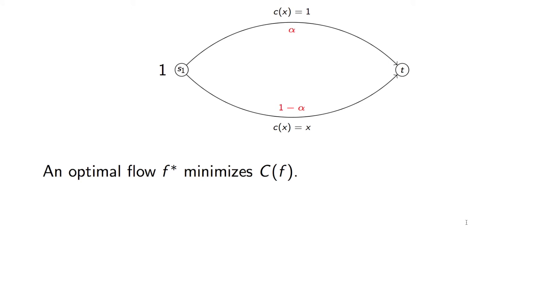Now an optimal flow is some flow that minimizes that cost function. So to do this we write down our cost function as a function of the flow, and a little bit of basic calculus shows us that the value of alpha that minimizes that function is 0.5. And so our optimal flow, F star, is 0.5, 0.5.